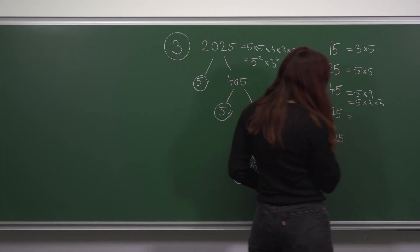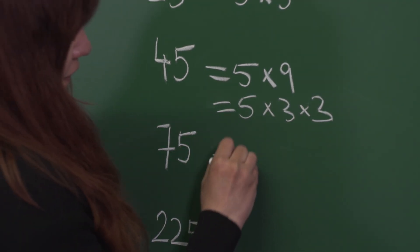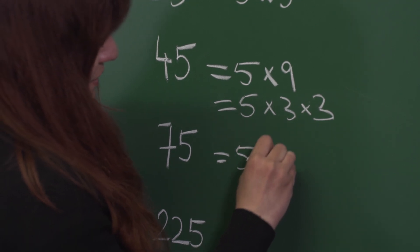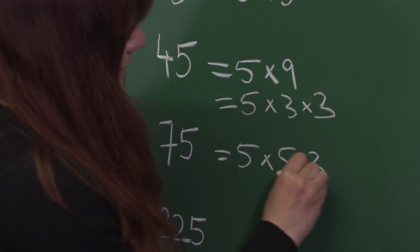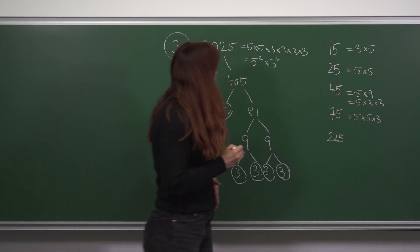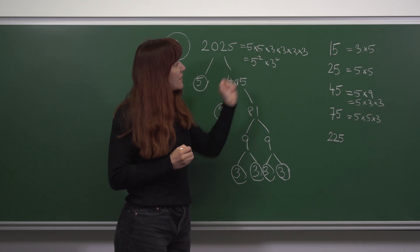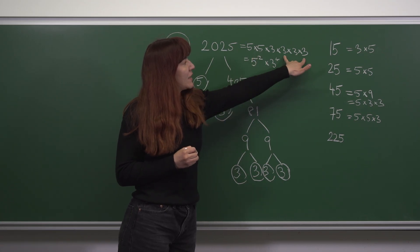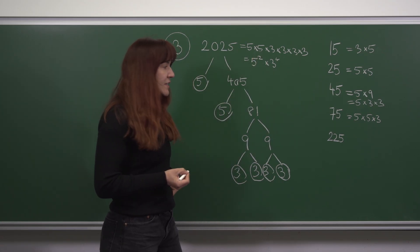75 is 5 times 5 times 3, which is a factor. 5 times 5 times 3 multiplied by 27 gives us 2025.